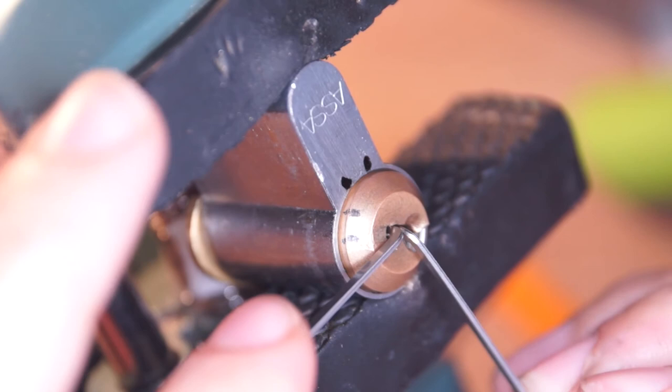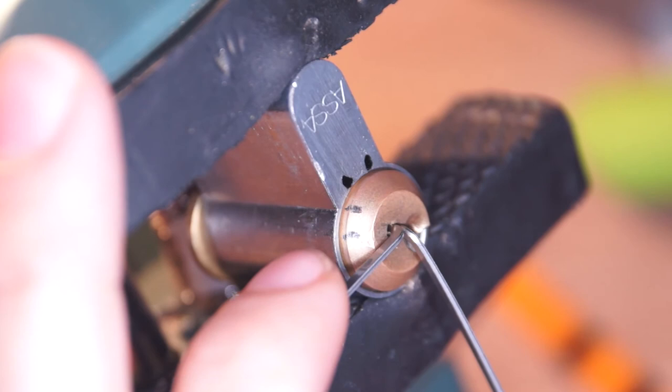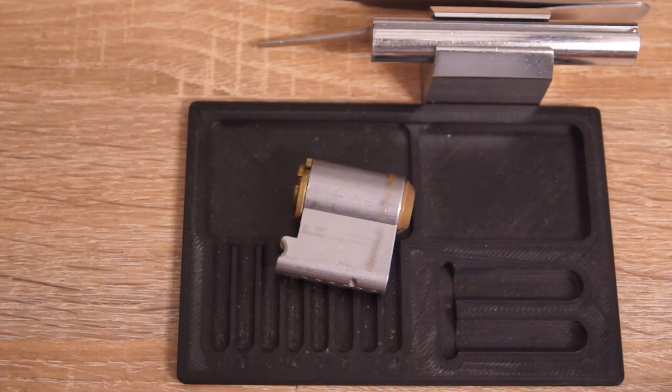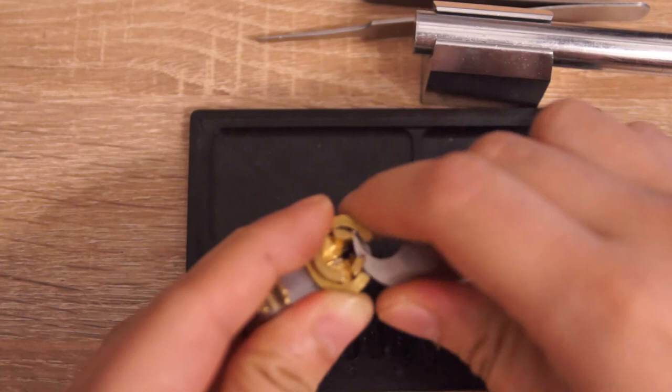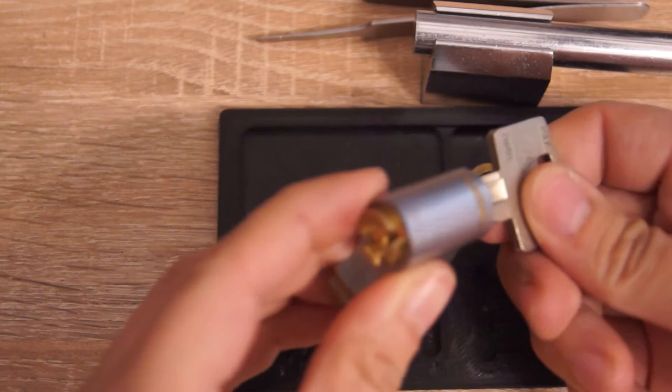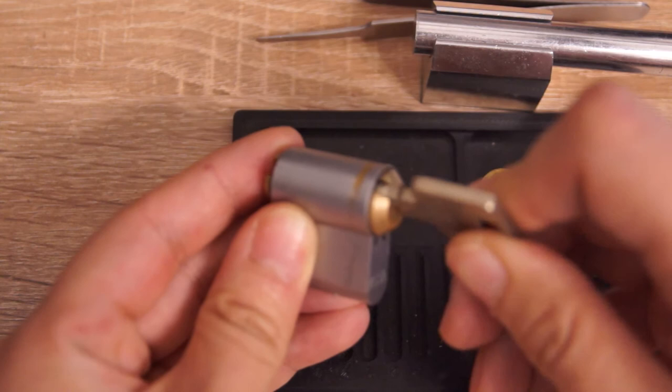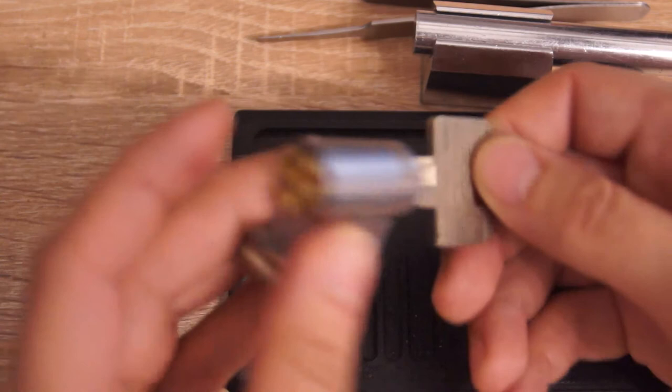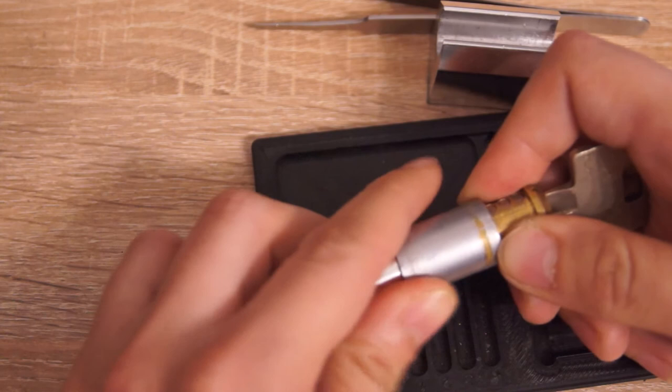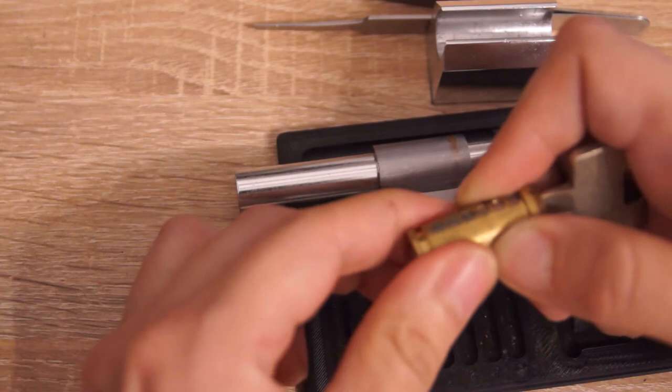That was very tricky. Now, let's gut this. First, let's remove this clip. Then, I will use the key, of course. Give it a twist. Then, I will use this follower and gently push out the core while holding the sidebar pressed with the thumb.